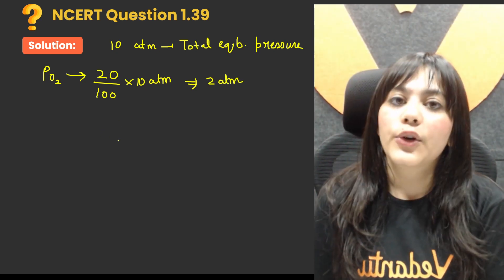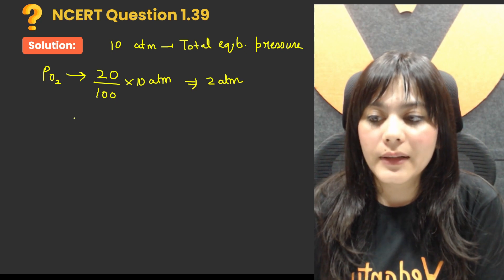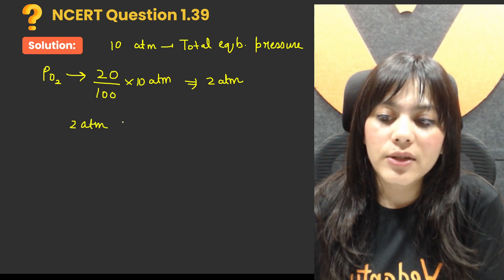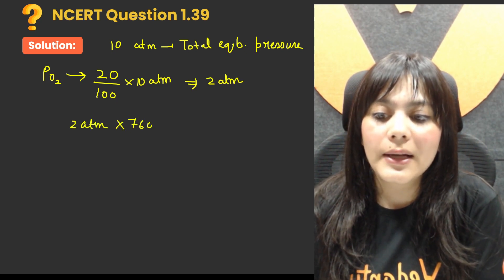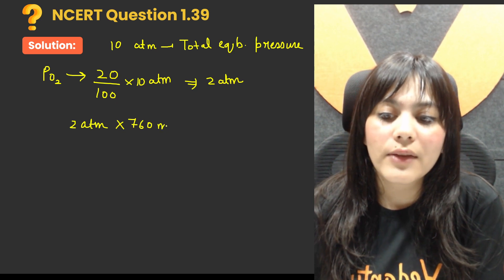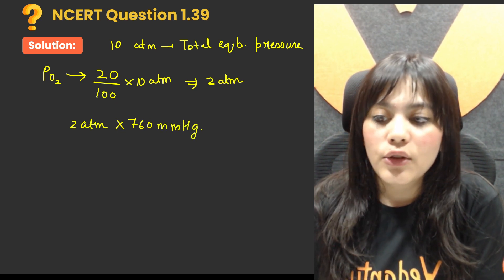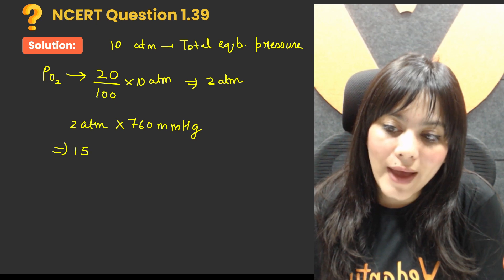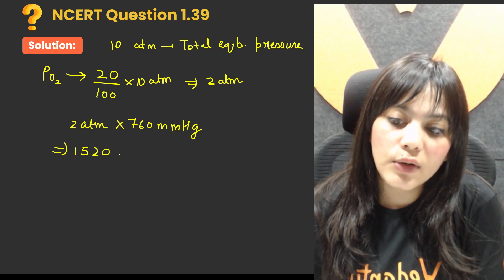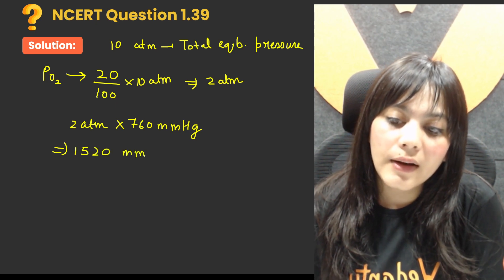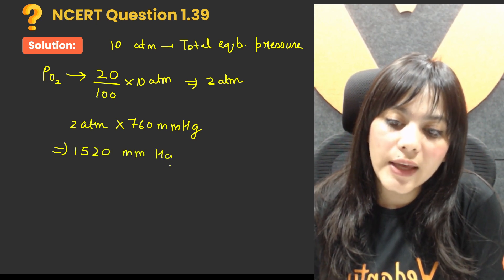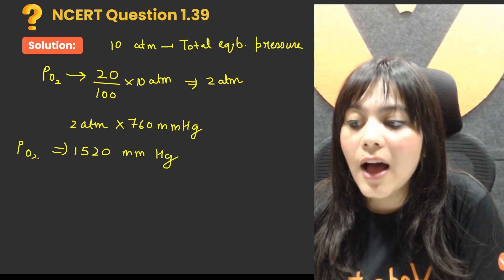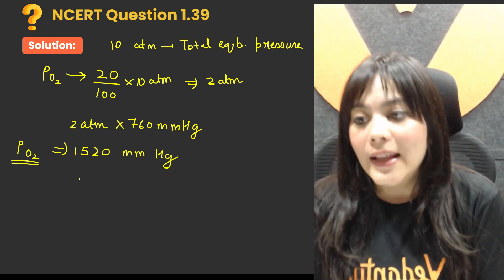Now we convert this 2 atmospheres to mmHg. So multiplying by 760 mmHg, we get 2 × 760 = 1520 mmHg. This is the partial pressure of oxygen.